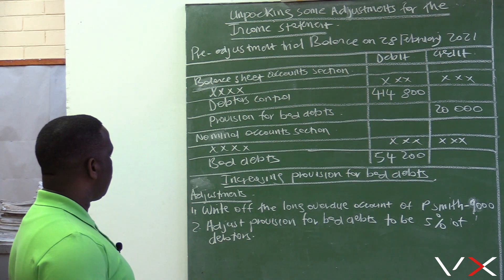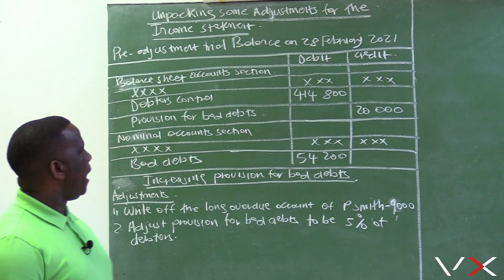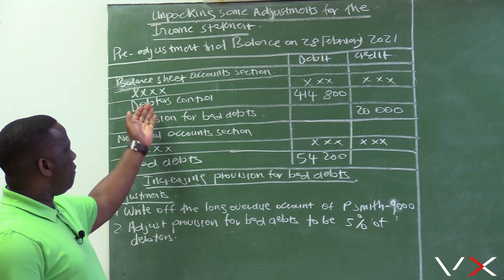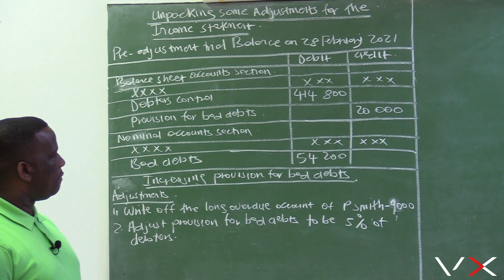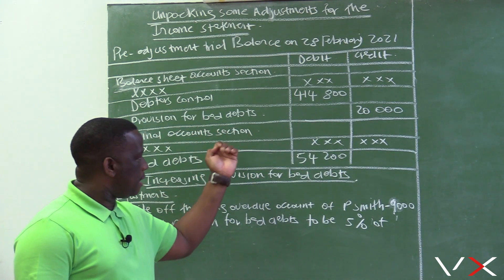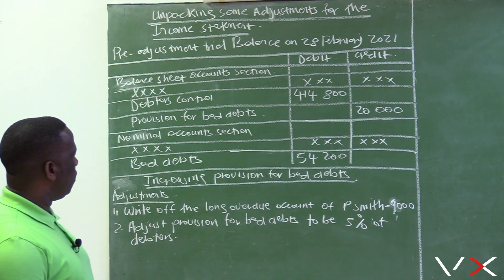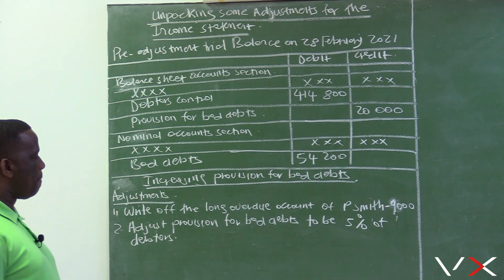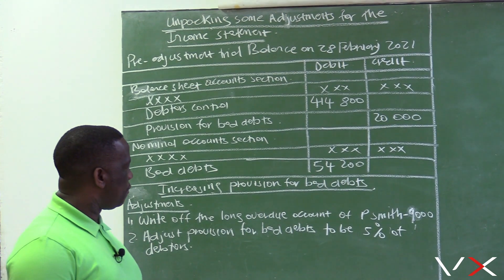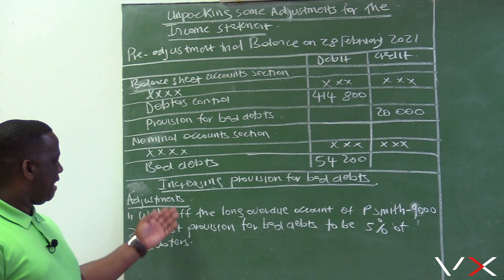We have this pre-adjustment trial balance on 28 February 2021, with a balance sheet account section and a nominal account section. Our debtors control here shows a total value of R414,800. The amount provided for bad debts is R20,000, which is the provision for bad debts on 28 February 2021. Under the nominal account section, bad debts for this year amounts to R54,200, and we want to look at increasing provision for bad debts.